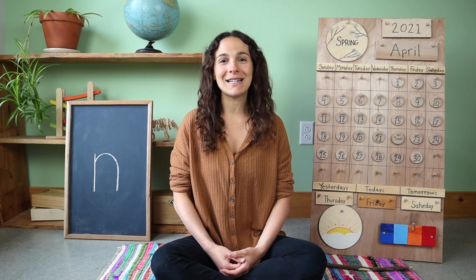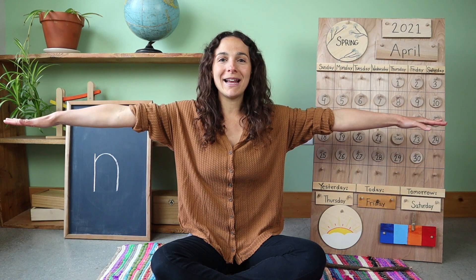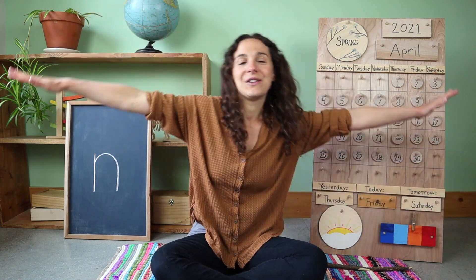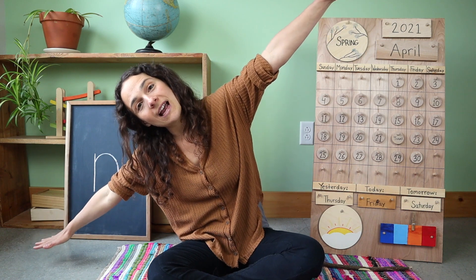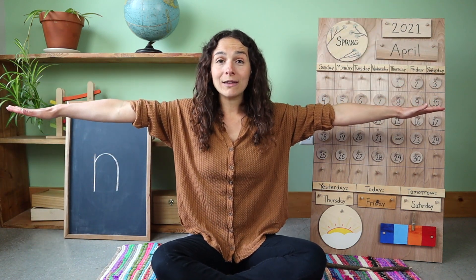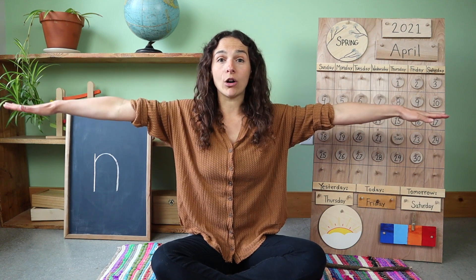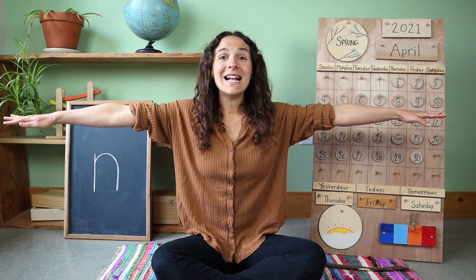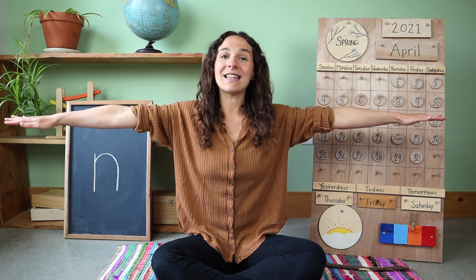Hello everyone and welcome back to Unbound Learners Pre-K. Happy Friday! Are you ready to sing our good morning song together? Let's stretch our arms out like airplane wings and fly your airplane to one side, fly your airplane to the other side, fly your airplane to the middle. What letter do we look like when we have our arms outstretched like this? We look like the letter T.